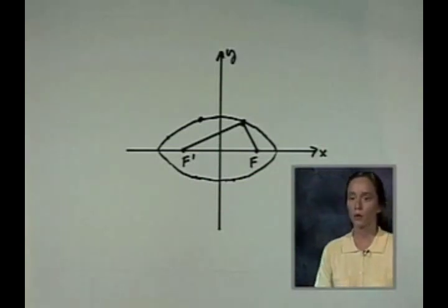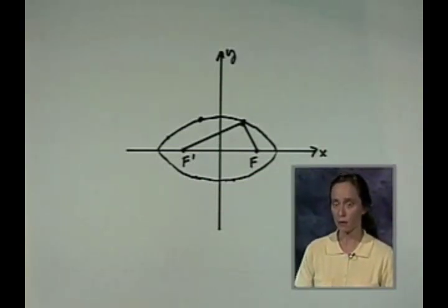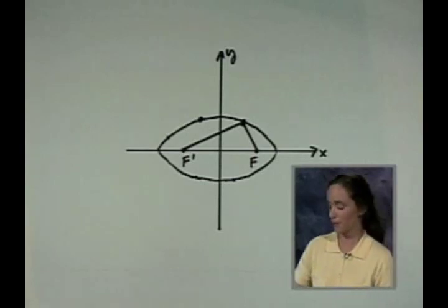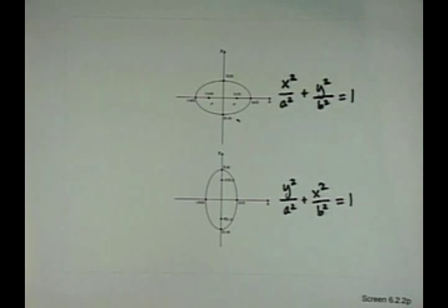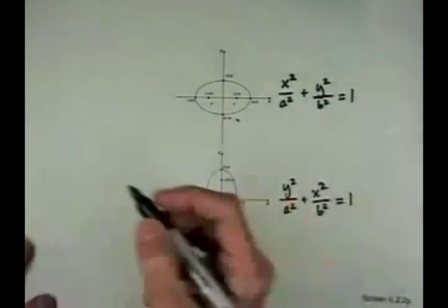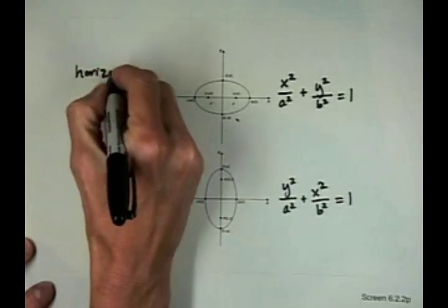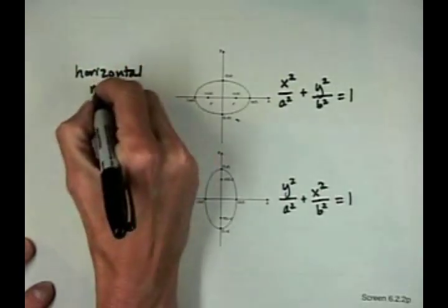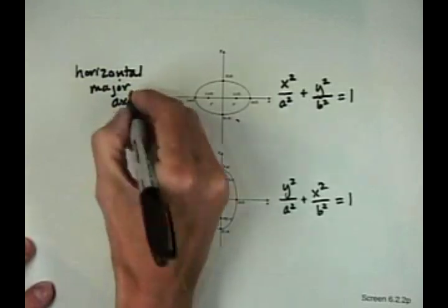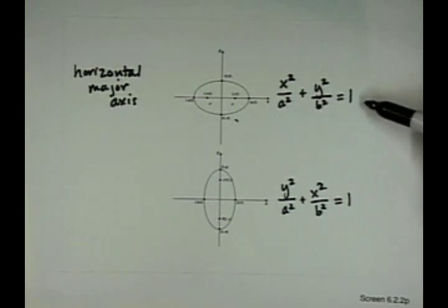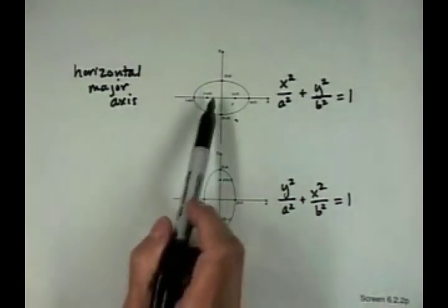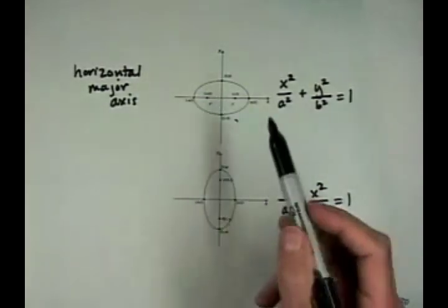We want to put an ellipse in a coordinate system so that we can work with it. Here are two pictures of ellipses. The first ellipse has a horizontal major axis — its long axis is horizontal. The equation of this kind of ellipse is x squared over a squared plus y squared over b squared equals one. The center of the ellipse is (0, 0).